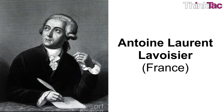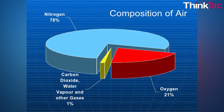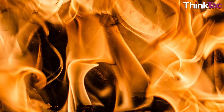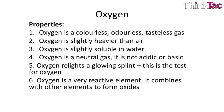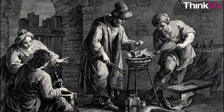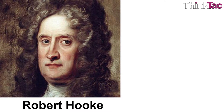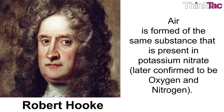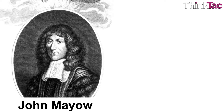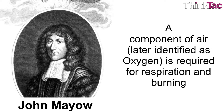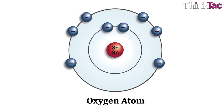Soon after, French scientist Antoine Laurent Lavoisier named this gas oxygen, calculated that oxygen forms about 21% of air, and determined that combustion is the combination of some materials with oxygen. Interestingly, even before oxygen was identified, many scientists had observed its properties. As early as the 16th century, Leonardo da Vinci noted that some amount of air is spent in combustion. By 1665, Robert Hooke figured out that air is formed of the same substance present in potassium nitrate — later confirmed to be oxygen. In 1668, John Mayow concluded that a compound of air, later identified as oxygen, is required for respiration and burning.